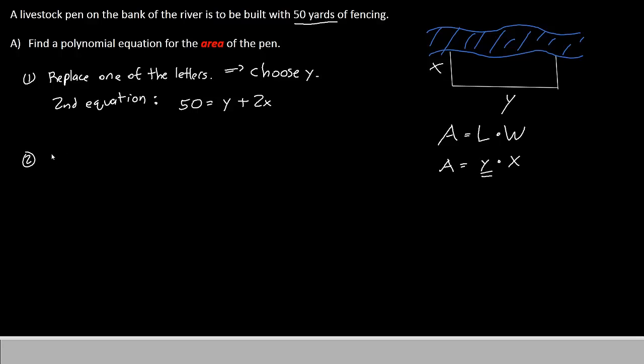So our second step is to solve the equation we just wrote for y. We'll rewrite the equation: 50 equals y plus 2x. In order to get y by itself, we will need to subtract the 2x to the other side. So on the left, we will have 50 minus 2x equals just y, because the 2x and the minus 2x cancel out.